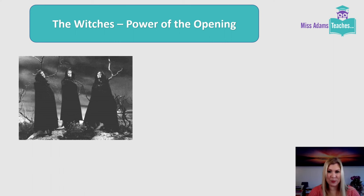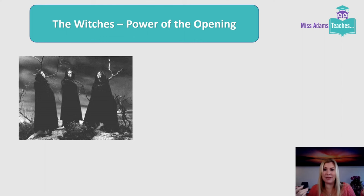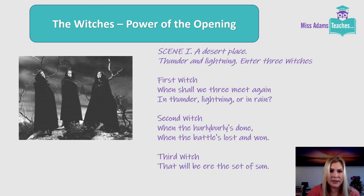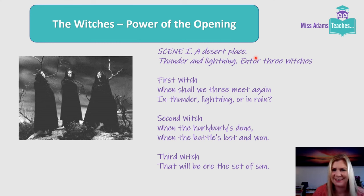Let's talk about the fact that the witches open the entire play. Structurally this is really significant. The play is called Macbeth but it doesn't open with Macbeth. It immediately shows that these characters that open and start the play are as important as the titular character. They are introduced in a desert place — some editions say on the battlefield — but either way it represents them as isolated from society or as a symbol of violence.